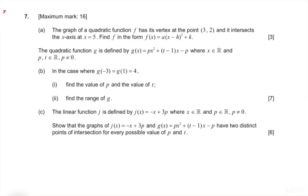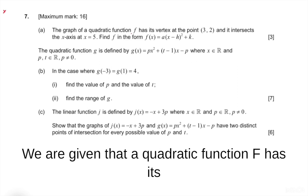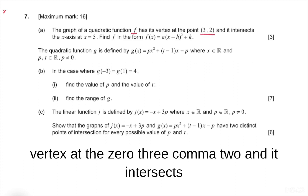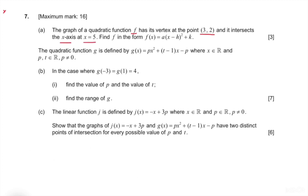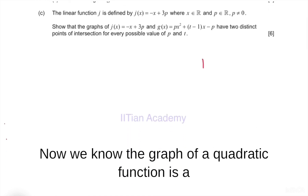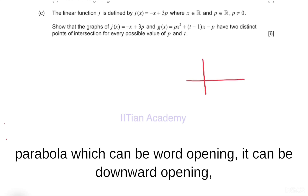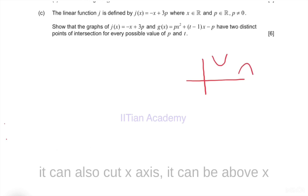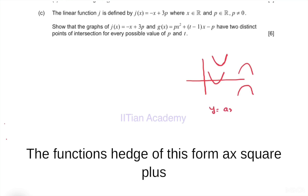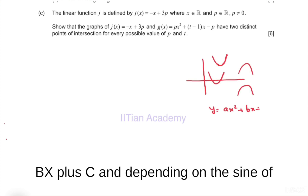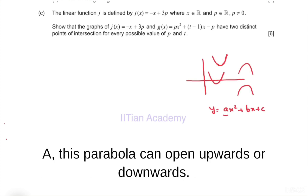We have a question on quadratic functions. We are given that a quadratic function f has its vertex at the point (3, 2) and it intersects the x-axis at x equals 5. The graph of a quadratic function is a parabola, which can be upward opening or downward opening, and can be above or below the x-axis. The function has the form ax² + bx + c, and depending on the sign of a, the parabola opens upwards or downwards.